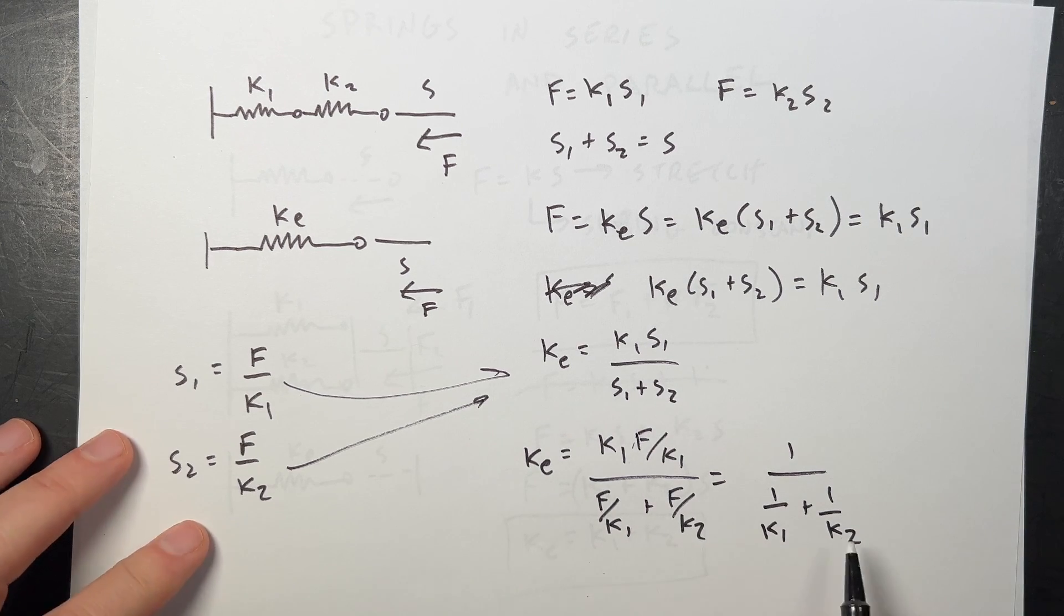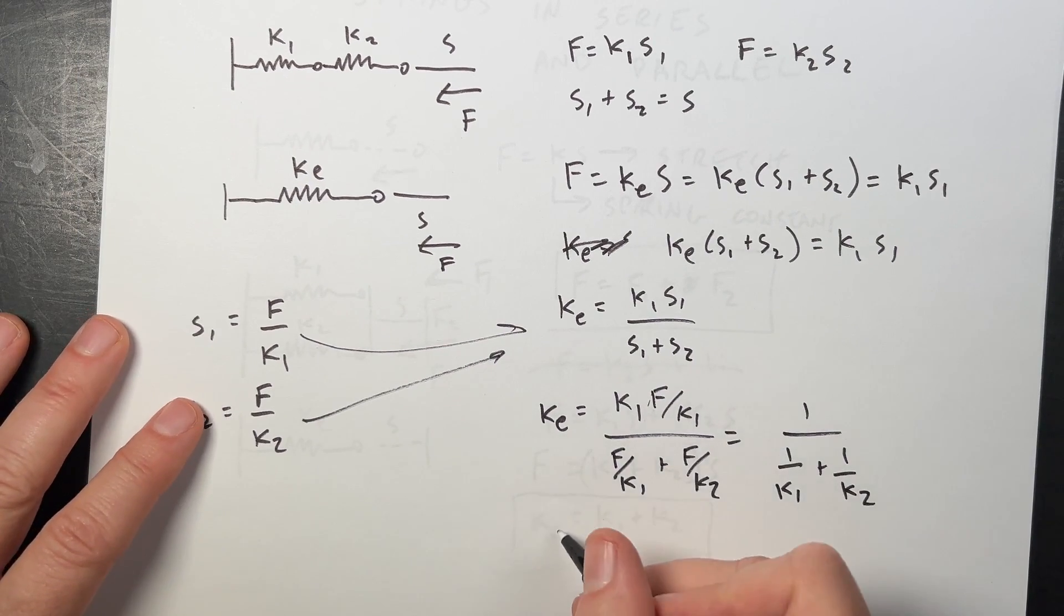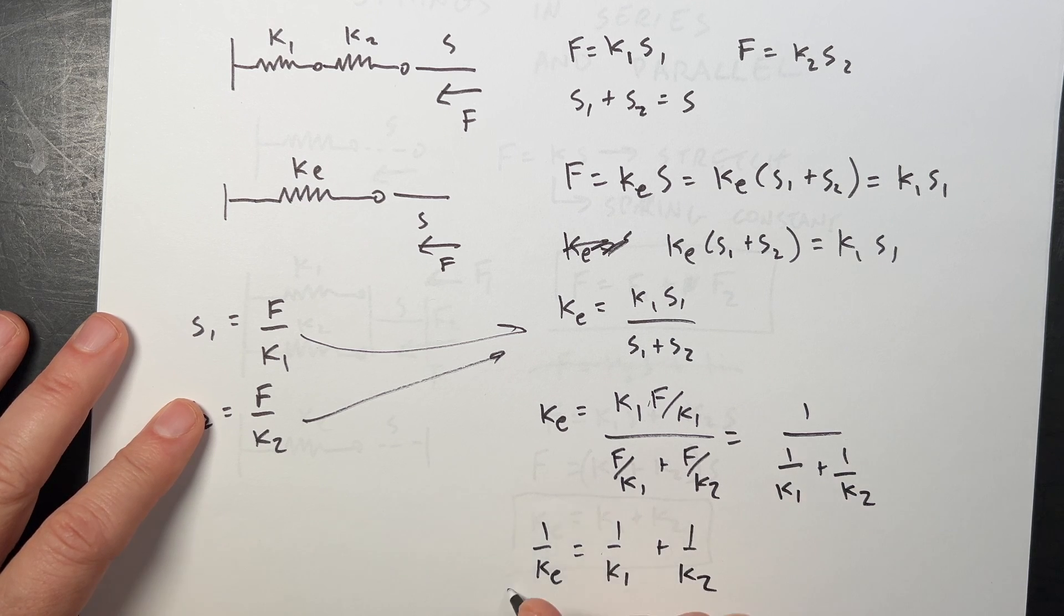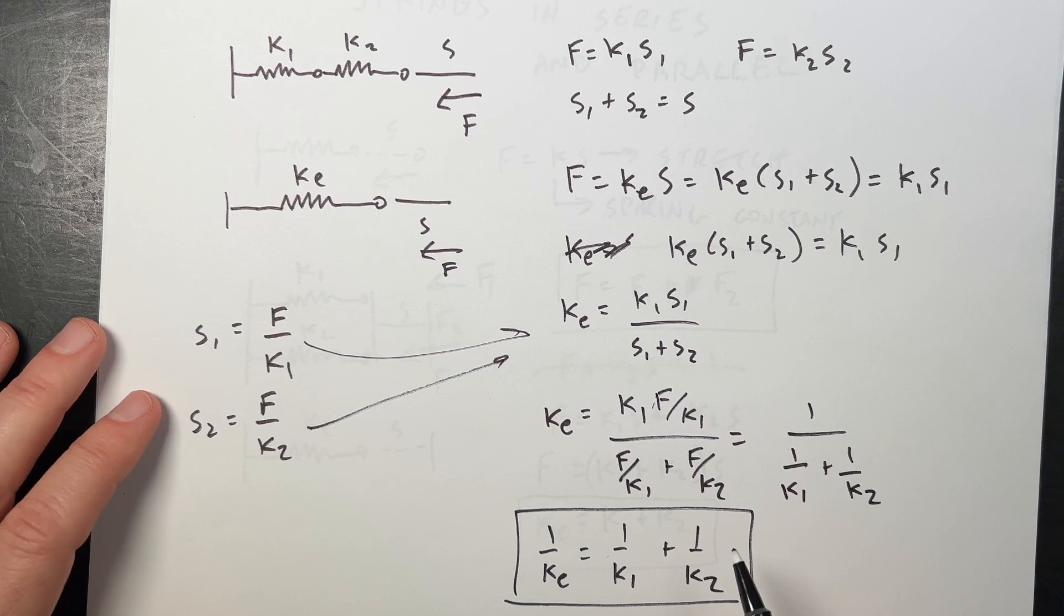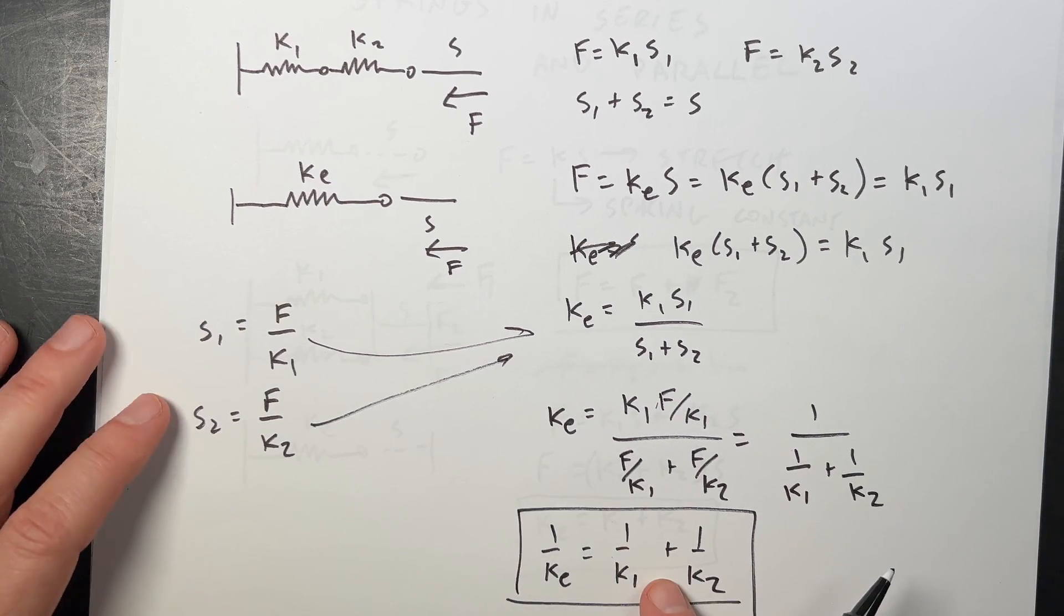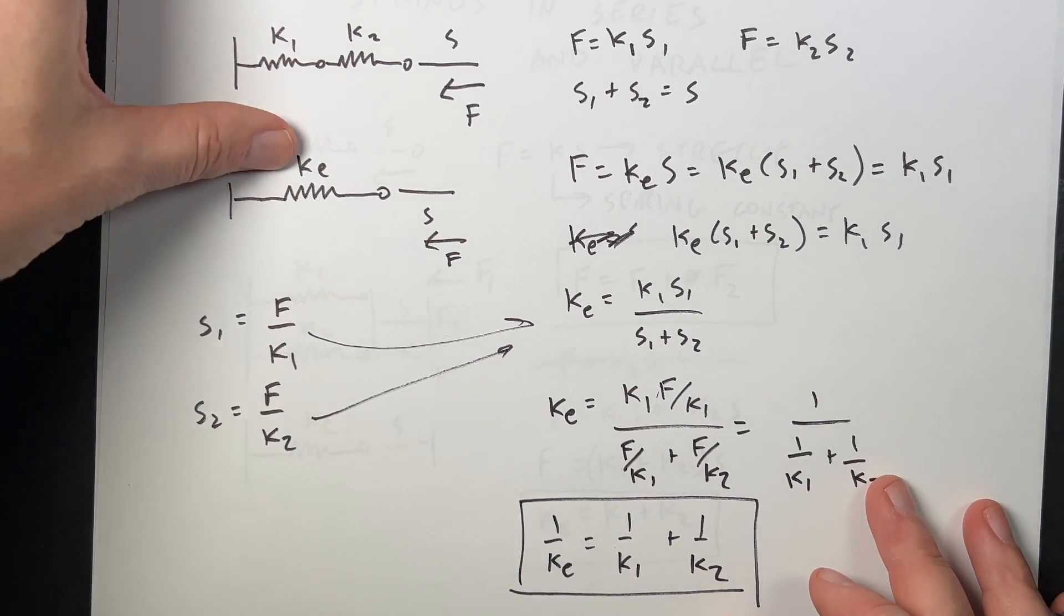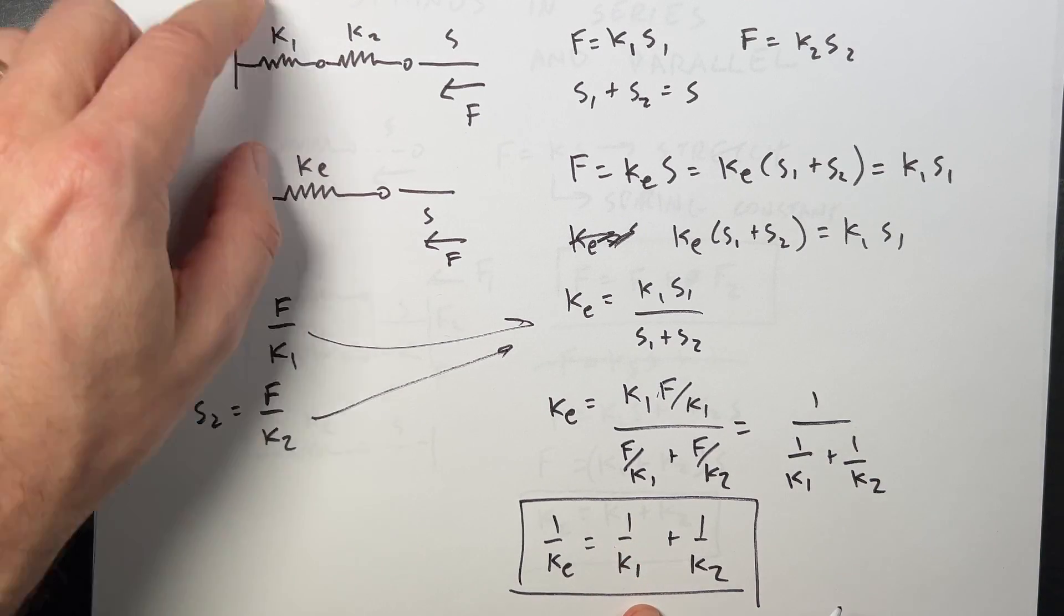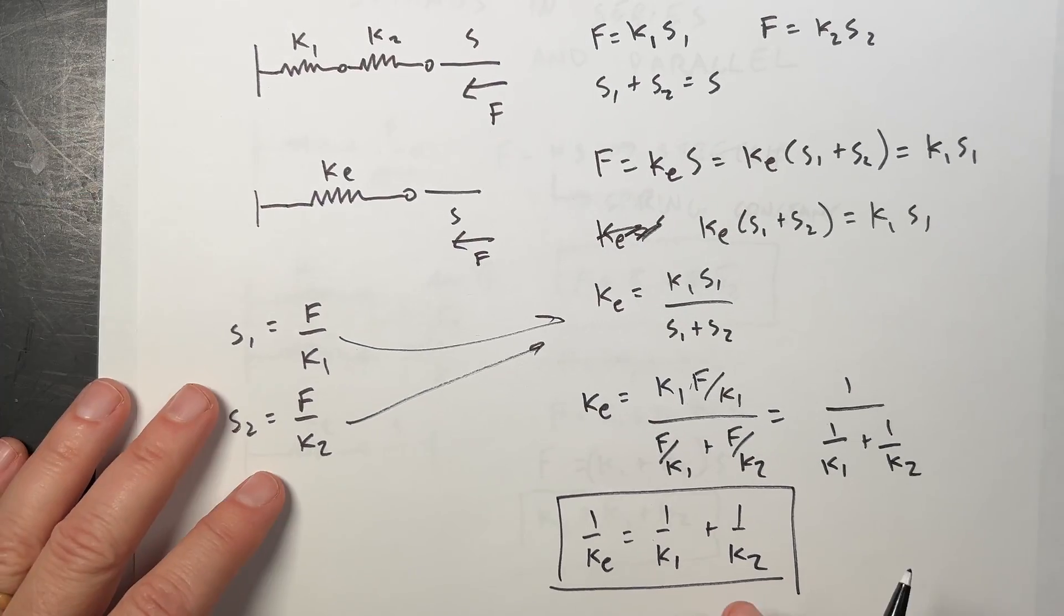Now one way I can write this equation is to take the inverse of both sides. And really this is the way that we normally write it. We would write it like 1 over K equivalent is equal to 1 over K1 plus 1 over K2. And that's your answer for the equivalent springs in series. And you'll notice that both these formulas look a lot like equivalent resistors in series and parallel. Except that series has the one that looks like resistors in parallel, and parallel looks like resistors. So there you go.